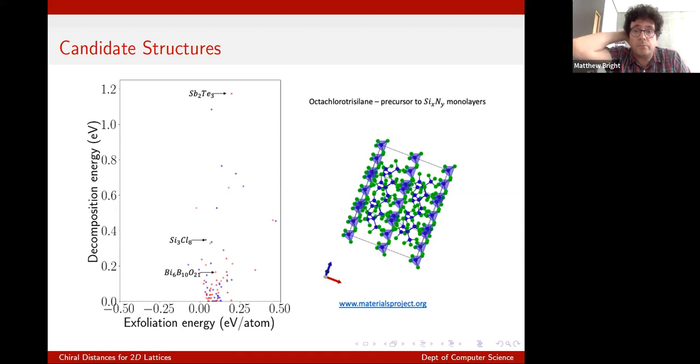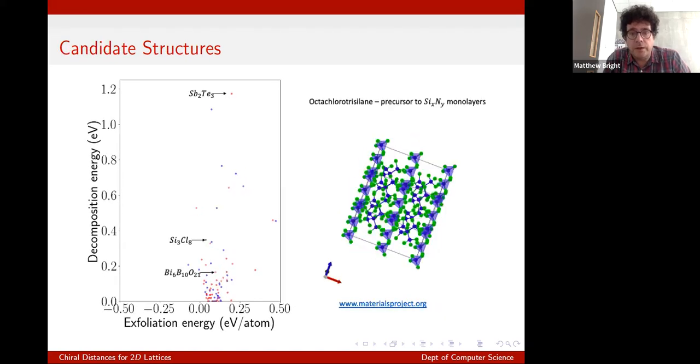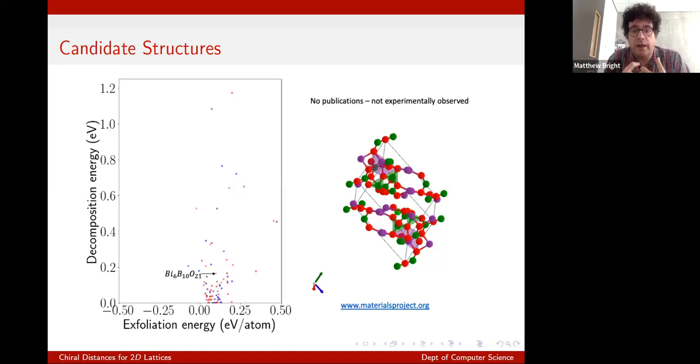But we can also find new things. So this is we've got a silicon and chlorine structure here, which is known as a precursor. It's a chemical precursor to silicon nitrogen monolayers, but on its own appears to possibly be able to form stable monolayers. And we can see here, I've picked an angle for the structure from the materials project that shows how that might possibly work. And even more enigmatically, we've got something down here. Now this rather odd construction with bismuth and boron and oxygen is not known. There are no publications. It's not experimentally observed, but it has been simulated as a possible, possibly stable material in the materials project database. And again, you can see where an asymmetric layer might be pulled off. So again, this shows that we can add chiral distance as a measure to existing data on 2D materials. And that's perhaps a helpful way of going hunting for materials of interest.